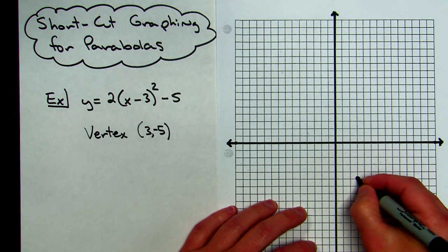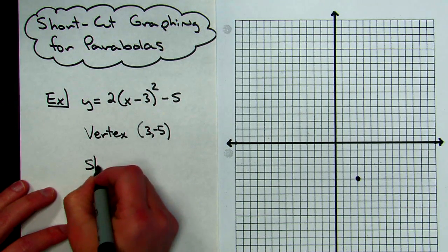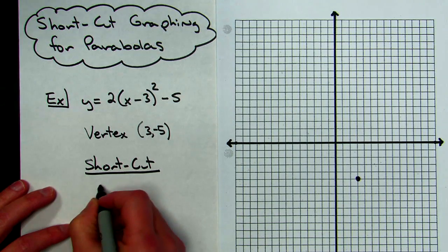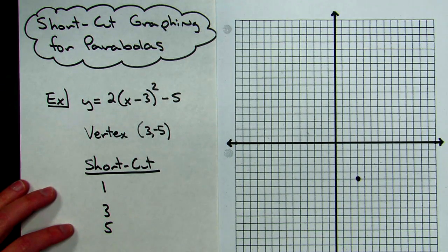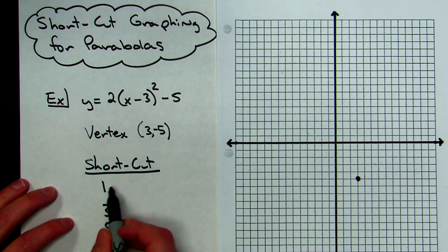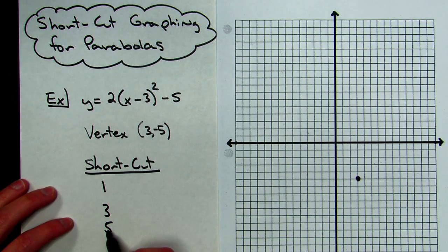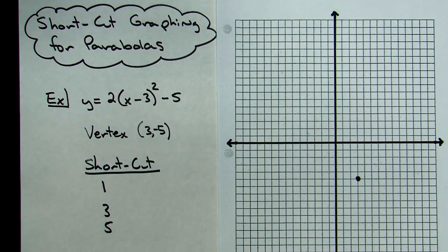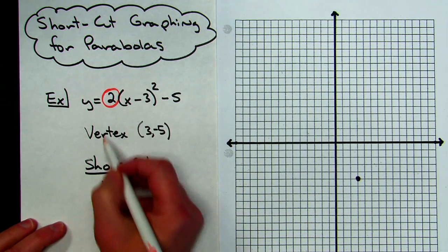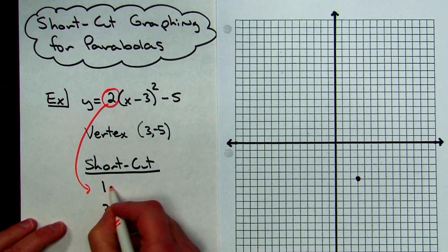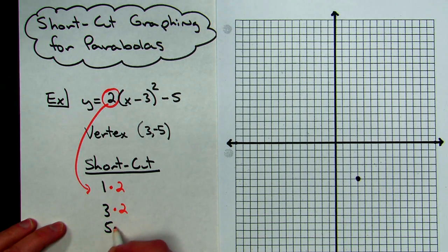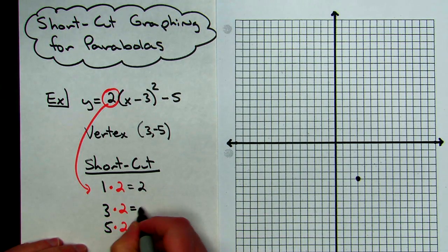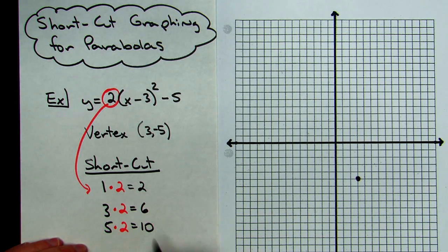Now the shortcut part. I am always going to use the numbers 1, 3, 5 all the time. And I am going to take 1, 3, 5, and I am going to multiply it by my A coefficient. In this case, my A coefficient is 2, so I'm going to multiply by 2, multiply by 2, multiply by 2. Now that's going to give me a 2, a 6, and a 10.